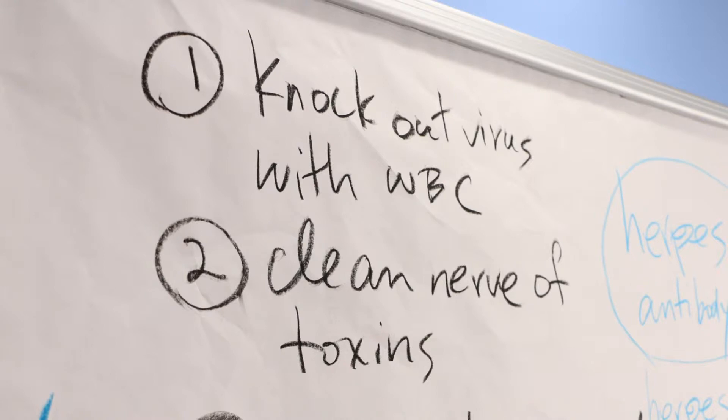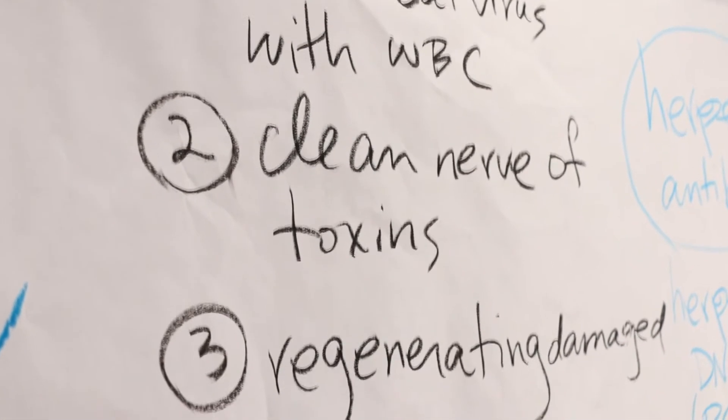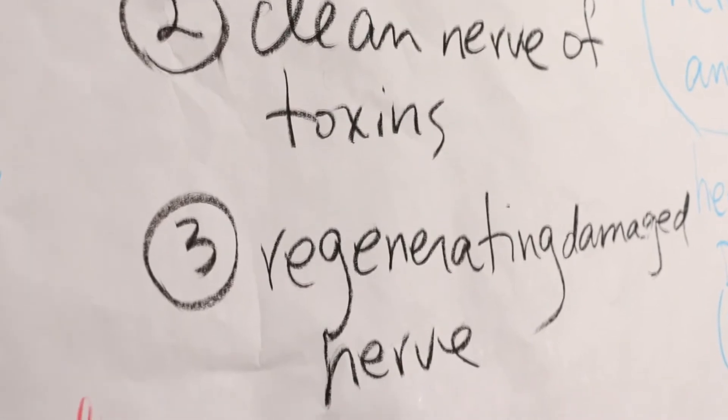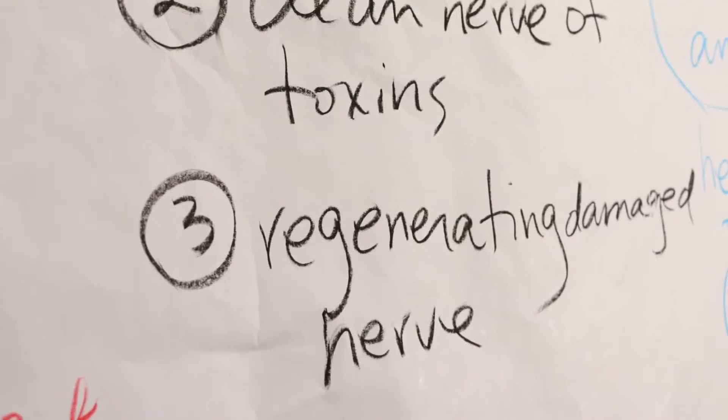Now once the virus is knocked out after the detox phase, cleaning the nerve of toxins handles the skin outbreaks. We could stop skin outbreaks if we get rid of all the toxins in the nerve. When you do that, then the frequency, how often you get the skin outbreak and how bad it gets, is reduced.